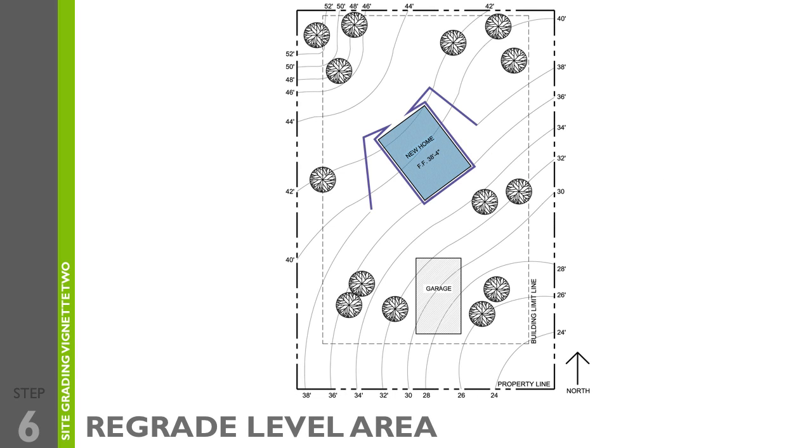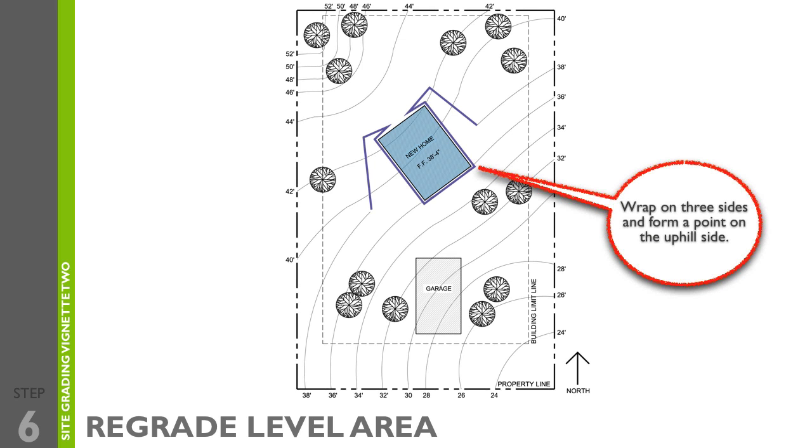Step number six is to regrade the level area. Regrade the level area contour line so that it wraps completely around the new home on three sides and forms points on the uphill side that are close together but don't touch. Be sure not to enclose this area or water will not drain properly.